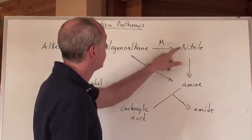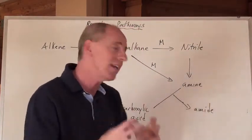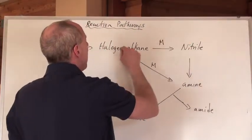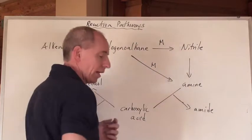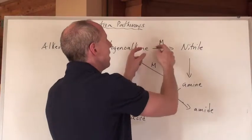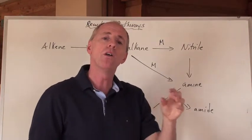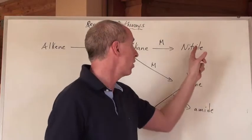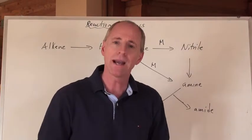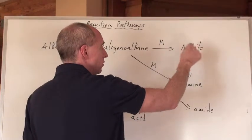If you wanted to go from the halogenoalkane to make a nitrile — a nitrile is a C triple-bonded to an N — cyanide in the form of potassium cyanide, under heat, will react. If it's a good leaving group like iodine, bromine, or chlorine, you pluck that off, put the CN on there, and you've got your nitrile. That's going to be an SN2 mechanism, because it's a primary location.